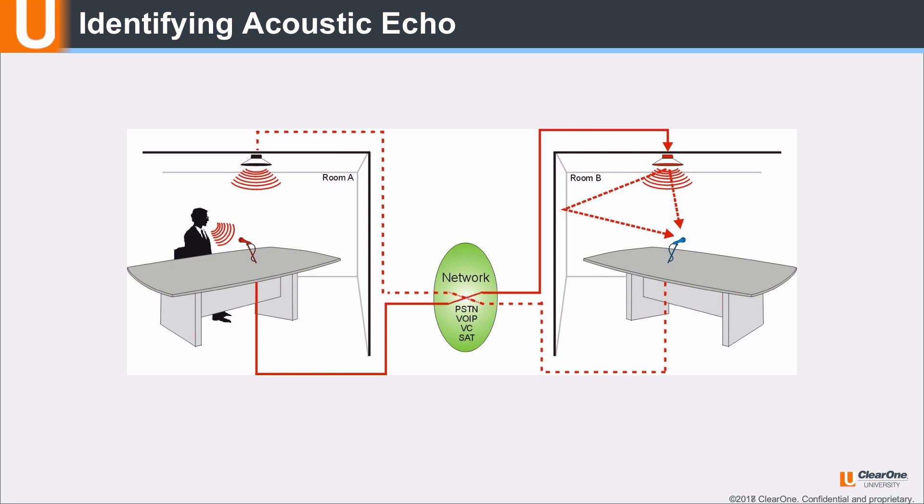Not all echo is acoustic echo, so how do you identify that the echo you are hearing is acoustic echo? Because of the path that my audio took from room A, across the network through room B, and then back across the network to room A, there will be a noticeable delay to the echo. Other equipment that processes the audio can add additional delay. This delay is a good indicator that the echo is acoustic echo. Let's have a listen.